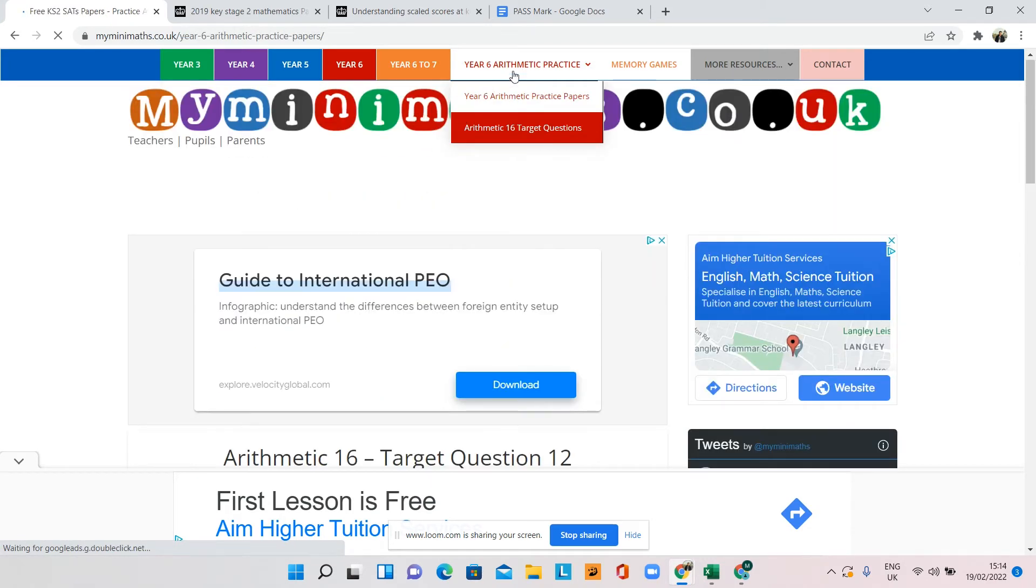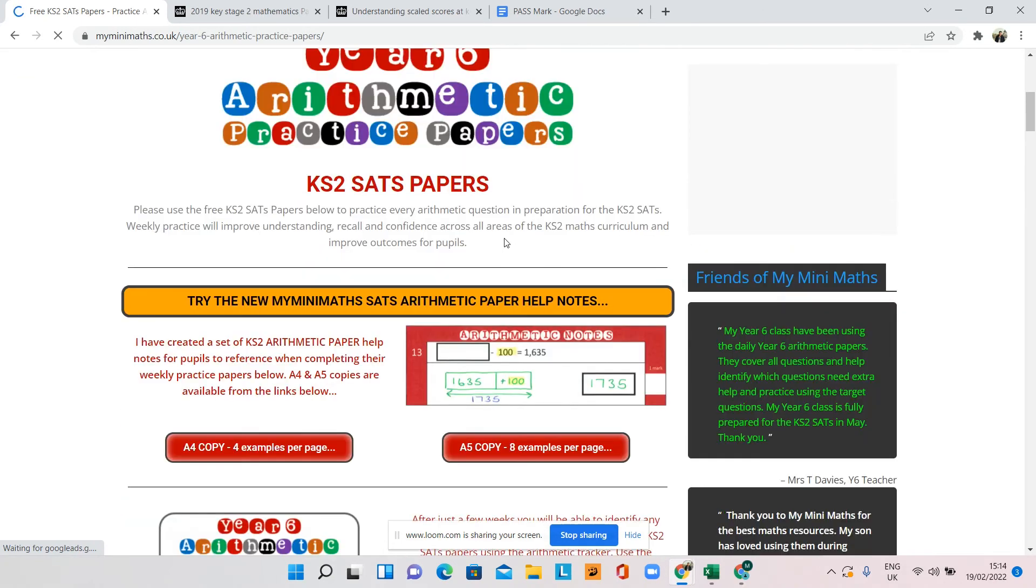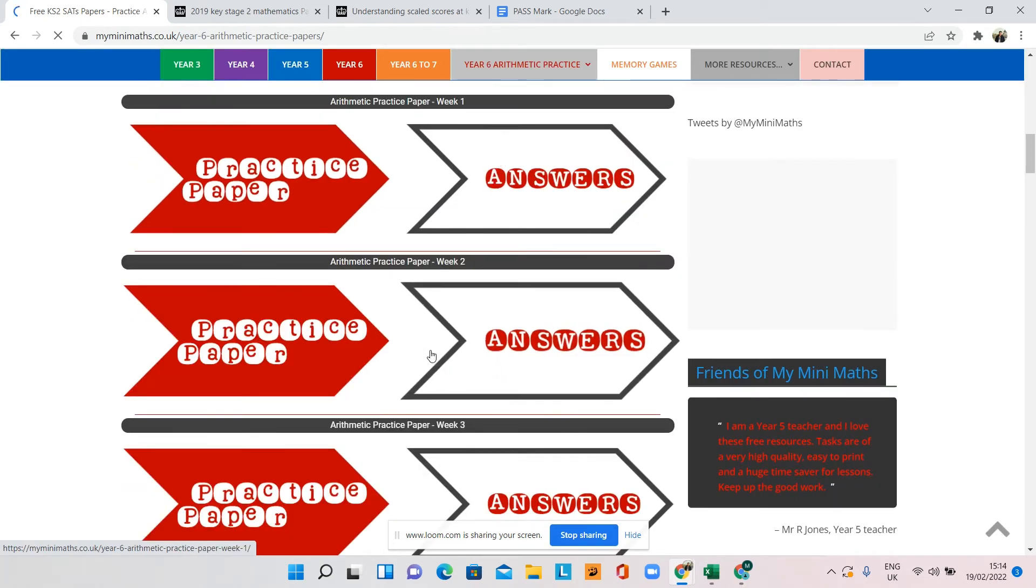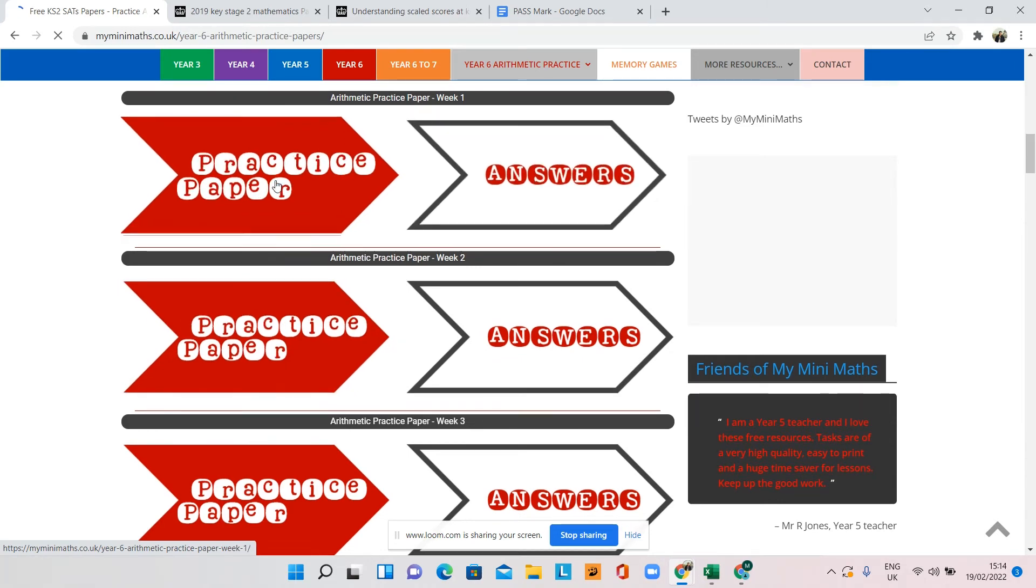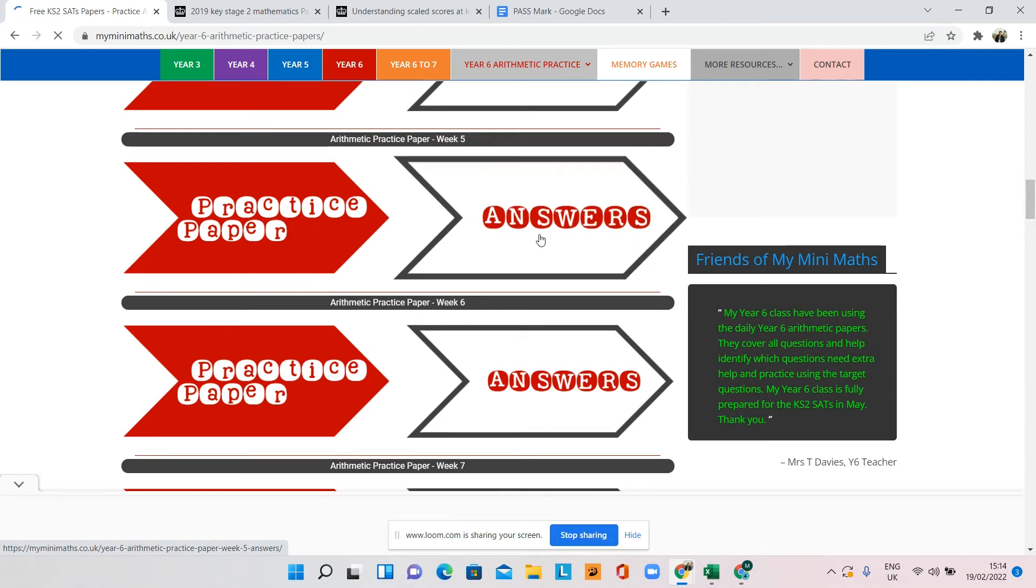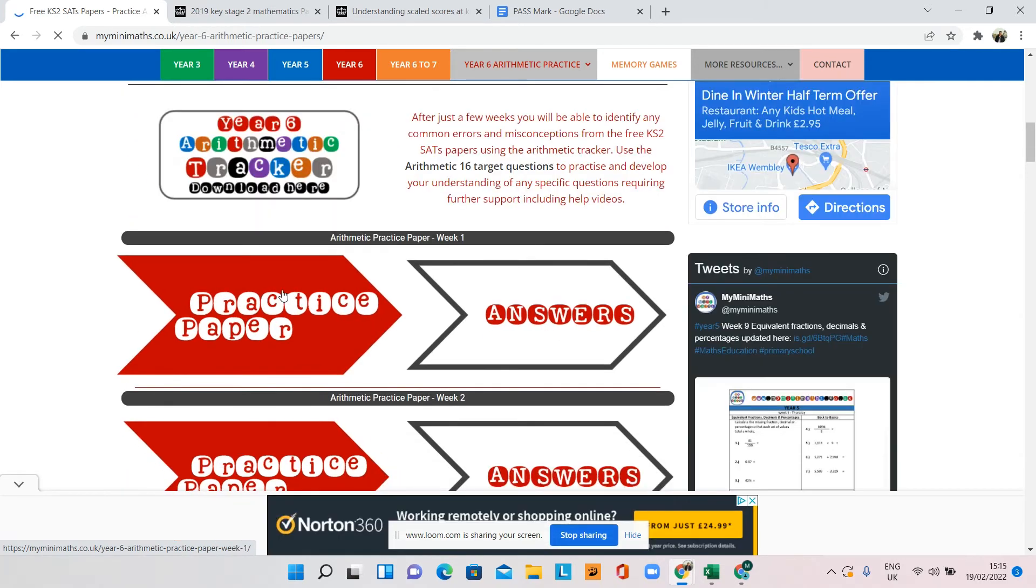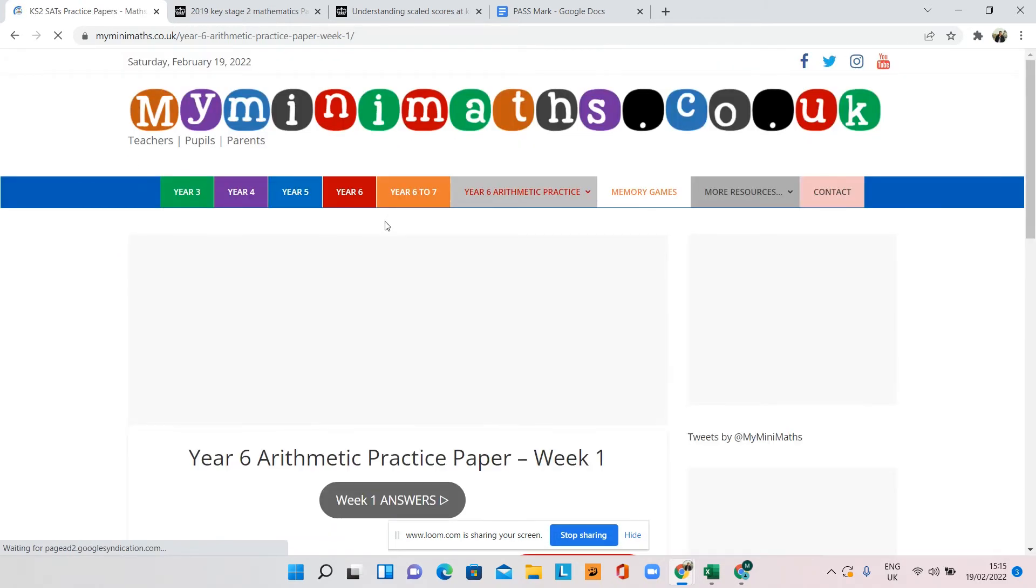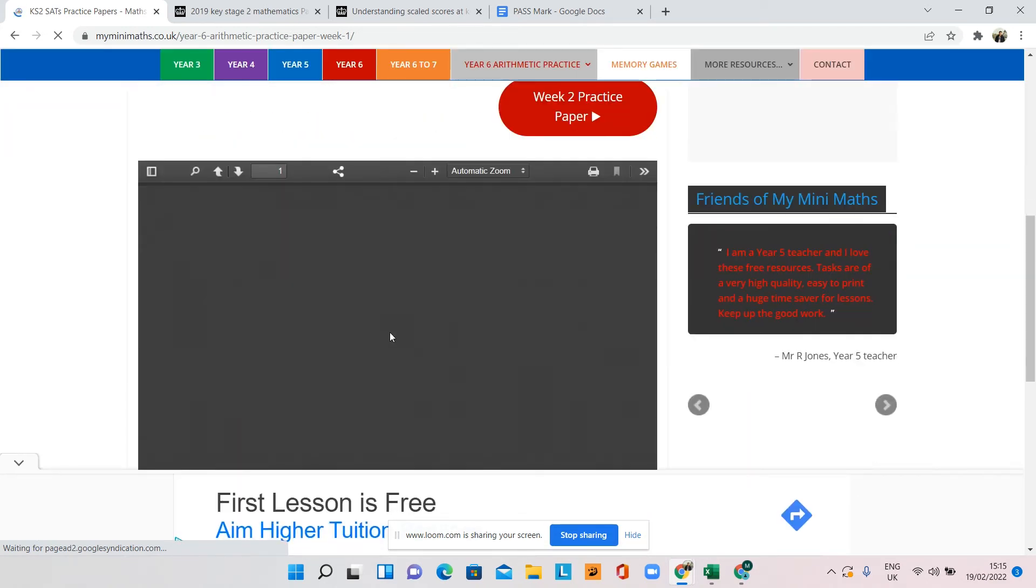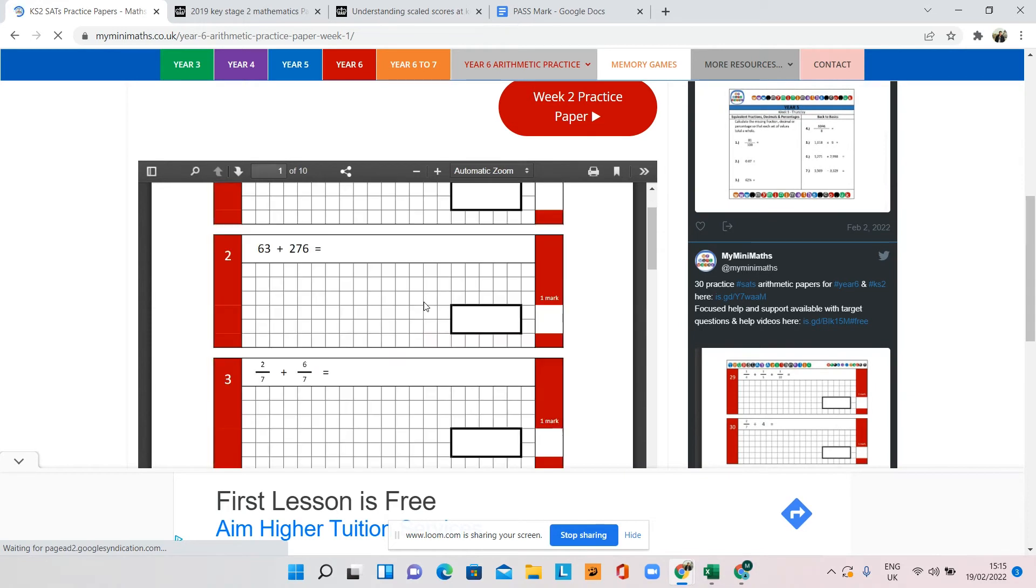So if you go to year six arithmetic, year six practice papers, you can see here once you've used all the other ones that are available through the government website, this website has created quite a few practice papers with answers that you can get your child to attempt. And what's great about it is even though they're a different color, they're red rather than blue, the format is very similar to how it would look